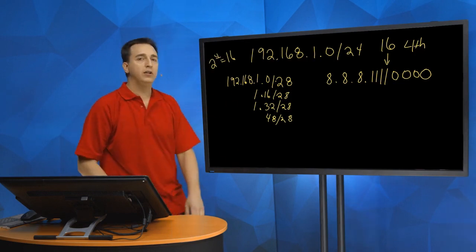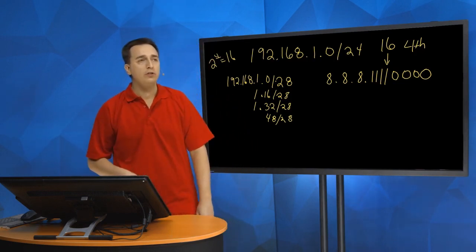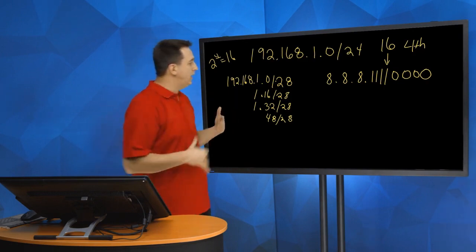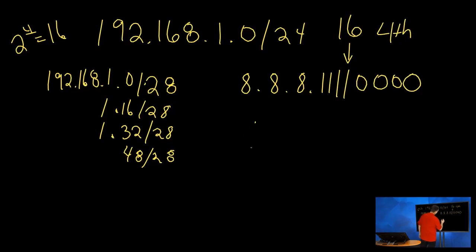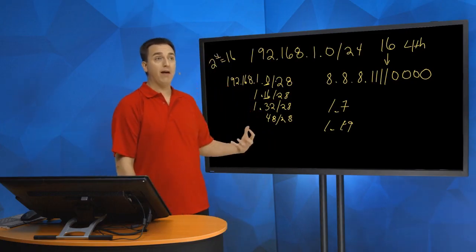Now if I asked you, we have a device, a PC with the address of 1.7 and another one with 1.19, are they in the same subnet? So 192.168.1.7, is it in the same subnet as 1.19? Well, 1.7 lives in this subnet and 1.19 lives in this subnet, so the answer is no, they're not in the same subnet.